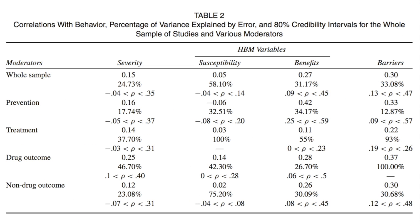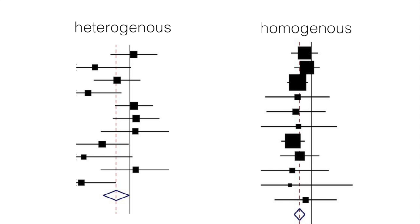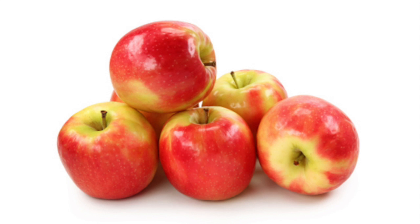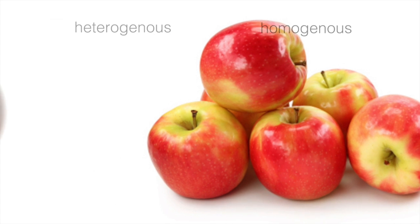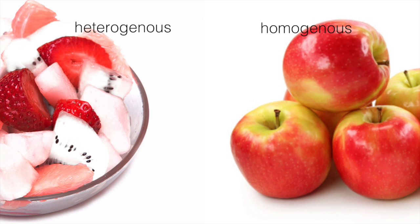One important thing to notice is that these effect sizes are heterogeneous — meaning the effect size differs depending on the samples you're looking at. This might give insight into where the Health Beliefs Model applies and where it's less helpful. To illustrate: a heterogeneous group is like a mix of fruit — apples, oranges, bananas, pineapples — all different. A homogeneous group is where they're all exactly the same. Heterogeneity might mean the apples are effective and the bananas aren't. A meta-analysis deals with this by pairing apples with apples and oranges with oranges to see which has the bigger effect size.